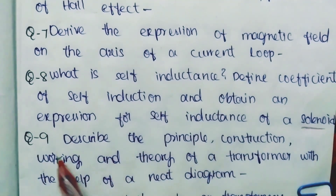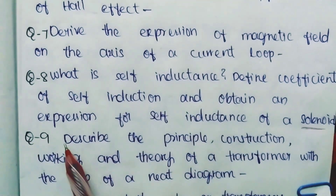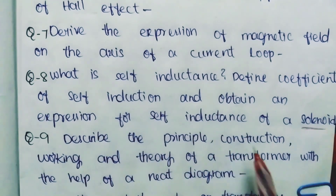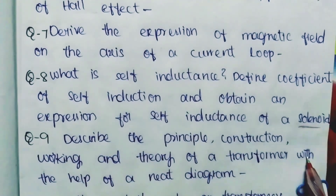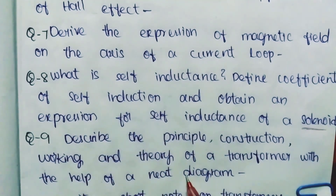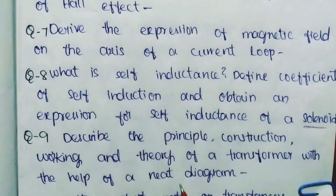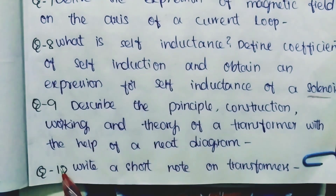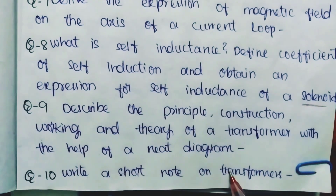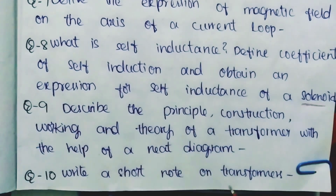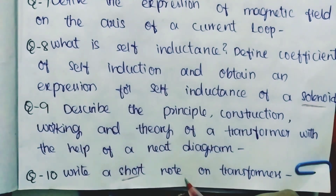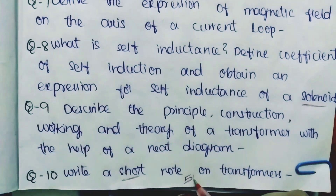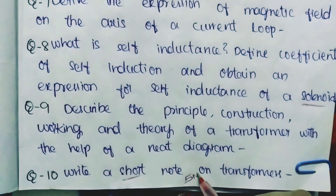Question Number 9: Describe the principle, construction, working and theory of a transformer with the help of a neat labelled diagram. Question Number 10: Write a short note on transformers. This short note is definitely a 5-mark question. From these 15 questions, this one is confirmed for 5 marks, and all others are 90 to 100 percent essays.